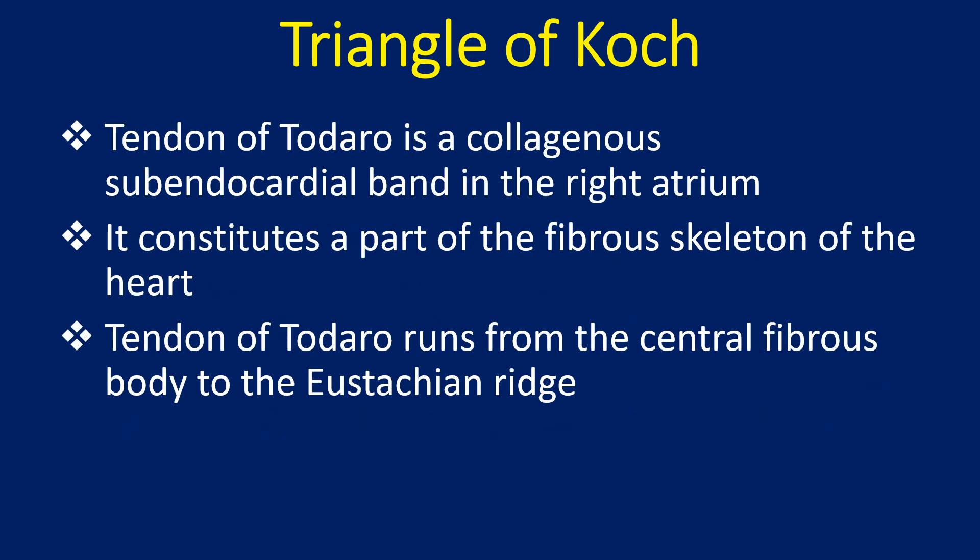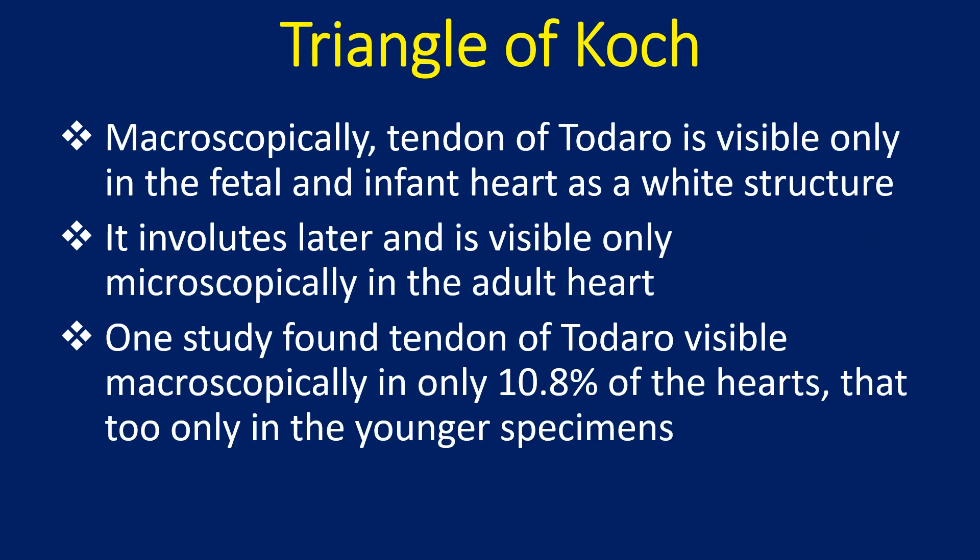The tendon of Todaro is a collagenous subendocardial band in the right atrium. It constitutes a part of the fibrous skeleton of the heart and runs from the central fibrous body to the eustachian ridge. Macroscopically, the tendon of Todaro is visible only in the fetal and infant heart as a white structure.